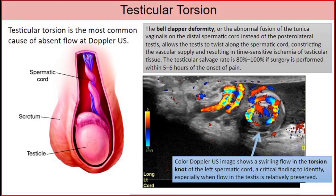Testicular torsion is the most common cause of absent flow at Doppler ultrasound. The bell-clapper deformity, or the abnormal fusion of the tunica vaginalis on the distal spermatic cord instead of the posterior lateral testis, allows the testis to twist along the spermatic cord, constricting the vascular supply and resulting in time-sensitive ischemia of testicular tissue. The testicular salvage rate is 80% to 100% if surgery is performed within 5 to 6 hours of onset of pain. This color Doppler ultrasound image shows swirling flow in the torsion knot of the left spermatic cord — a critical finding to identify, especially when flow in the testis is relatively preserved.